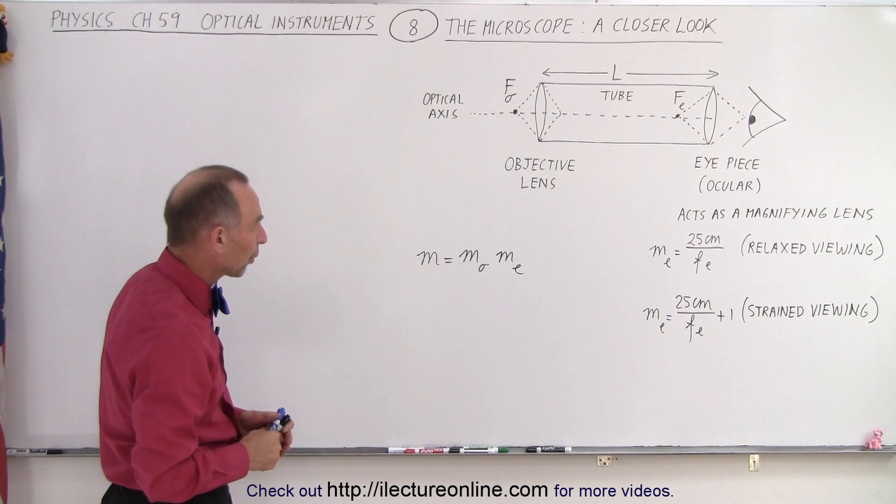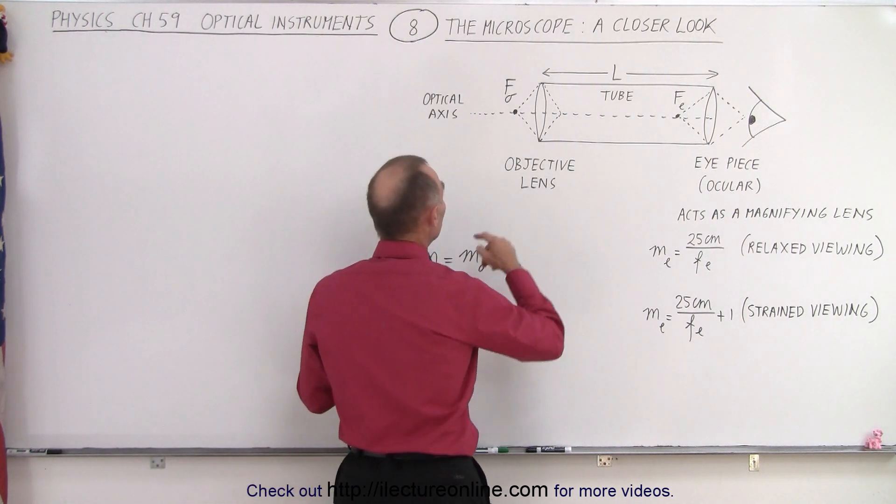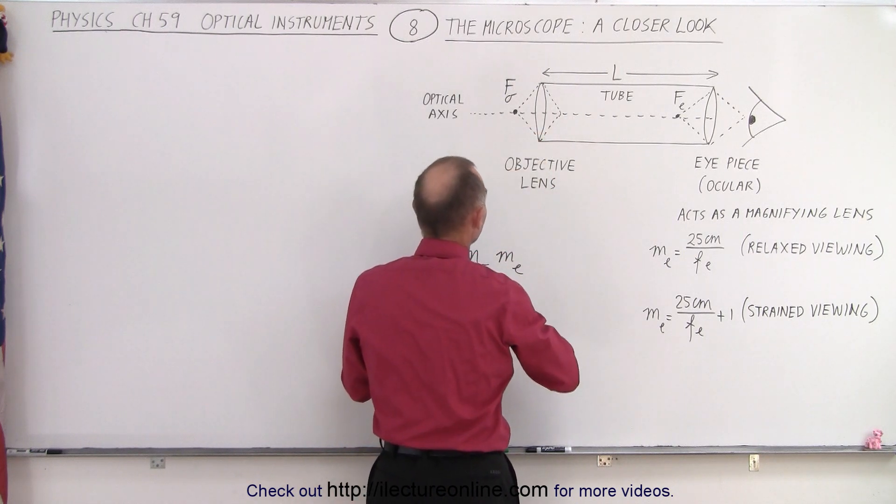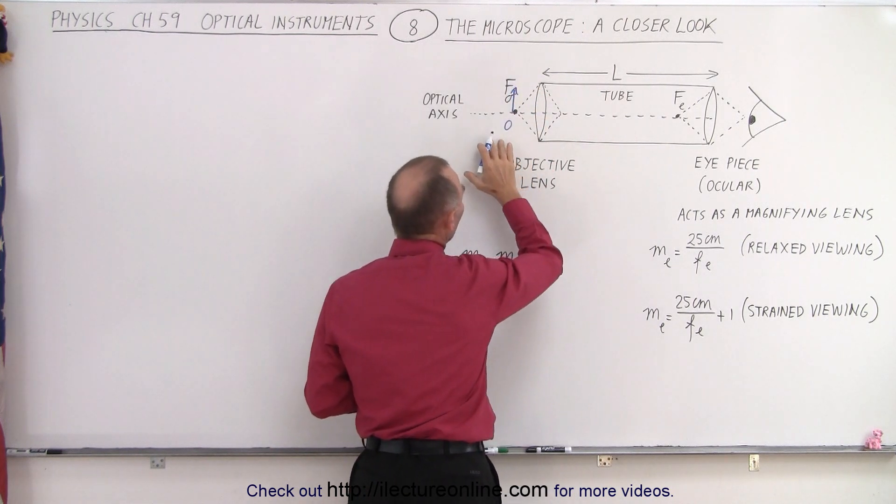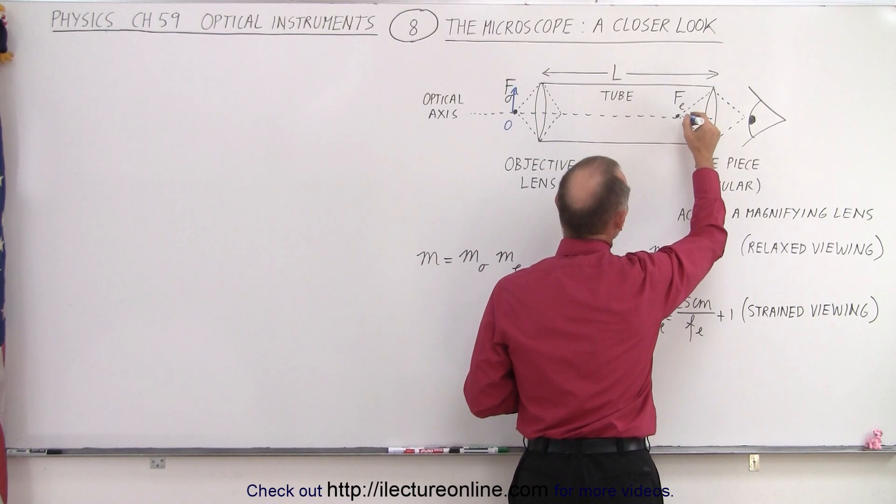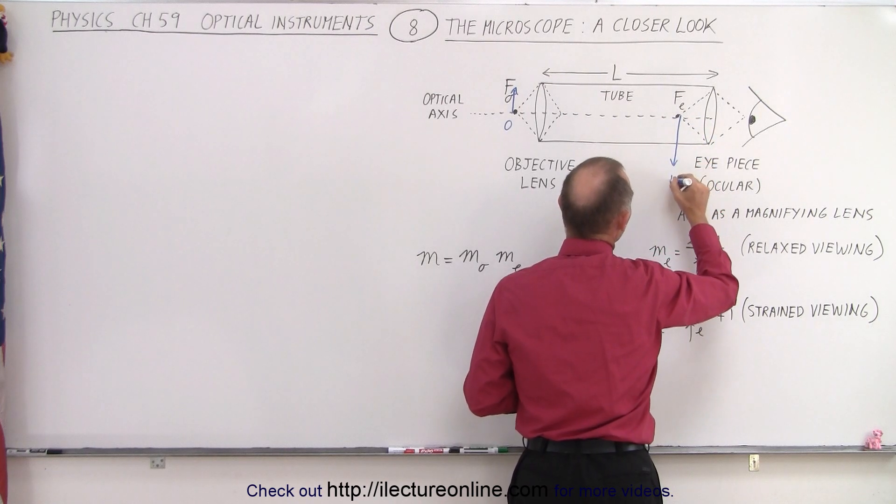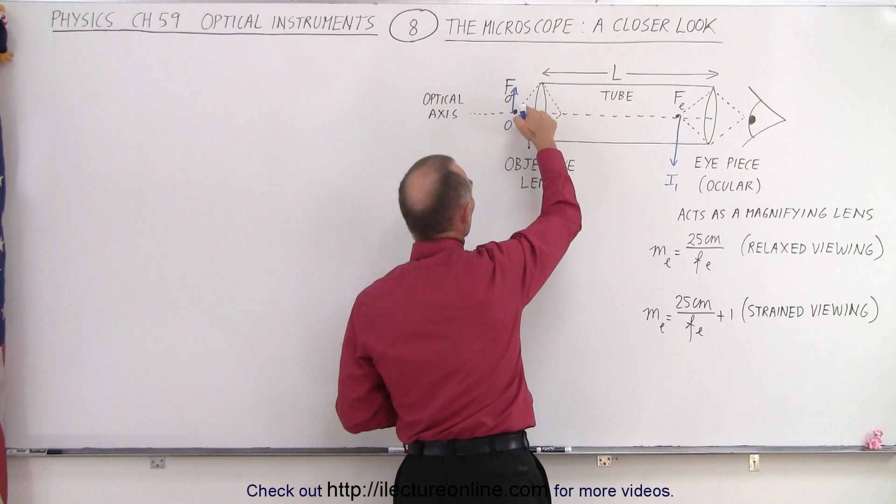But the way a microscope works is that we will place an object close to the focal point of the objective, typically a little bit before the focal point or very close to it. So here let's put an object right there, which causes an image to form just inside the focal point of the eyepiece. So there's the first image caused by placing the object right in front.